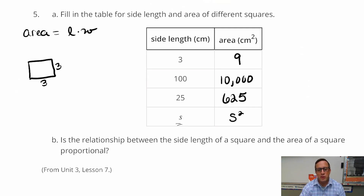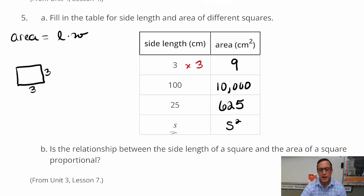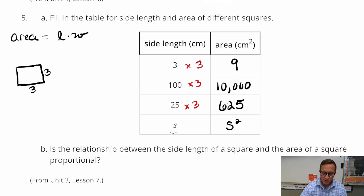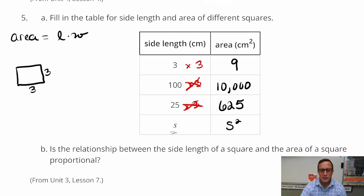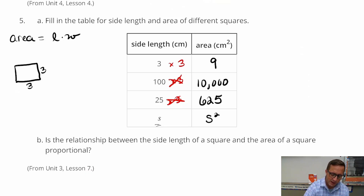The question asks whether the relationship is proportional. No, it is not. In order for it to be proportional, we'd have to have the same constant of proportionality. Right off the bat, you can multiply the side by 3 to get the area for 3, but that doesn't work for any others — 100 times 3 is 300, not 10,000; 25 times 3 is 75, not 625. There's no single number you can multiply the side length by to always get the area. So area is just not proportional. Circumference is proportional, but not area.